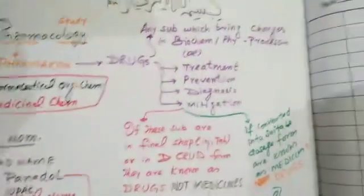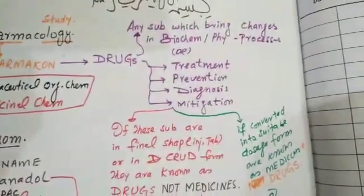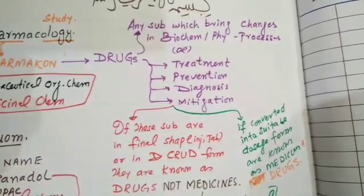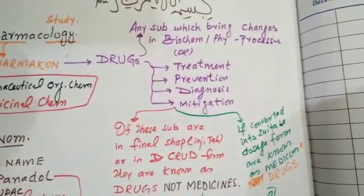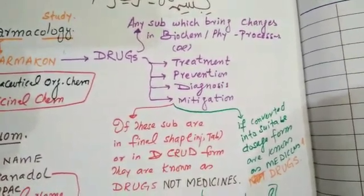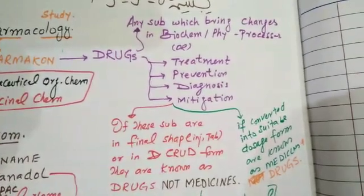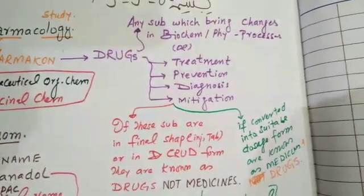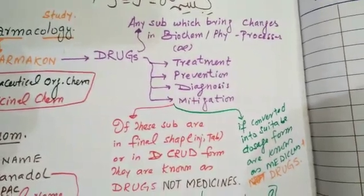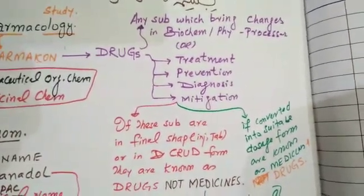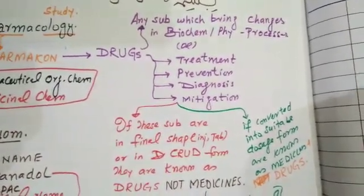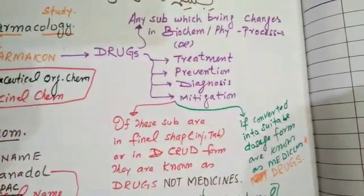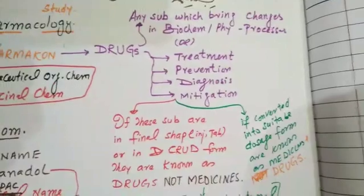Drugs are defined as any substance which brings changes in biochemical or physiological processes. However, according to this definition, food and any drinkable things would also be drugs, but they are not. So if a substance is used in a particular recommended dose which brings changes in biochemical or physiological processes, it is known as a drug.